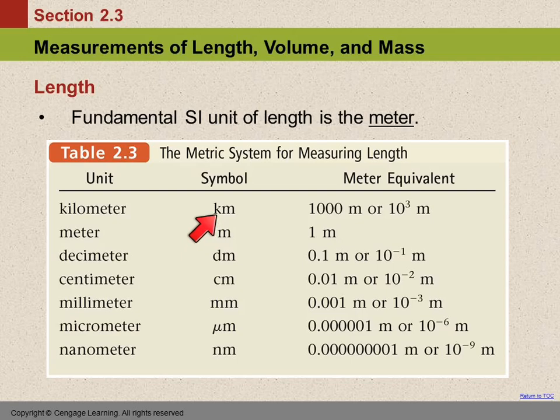A kilometer, kilo means a thousand. A kilometer is a thousand meters. A thousand is the same as ten to the three. Ten to the three meters.